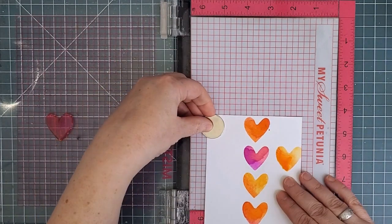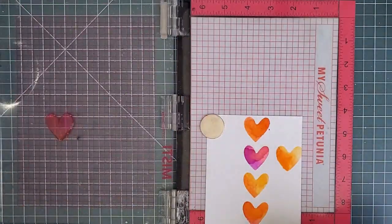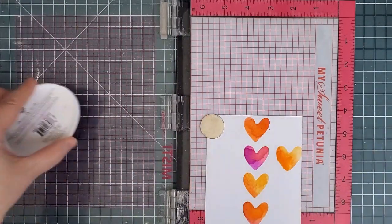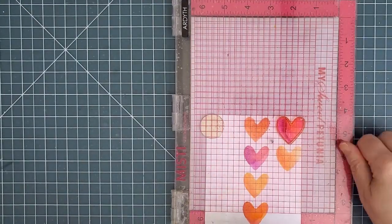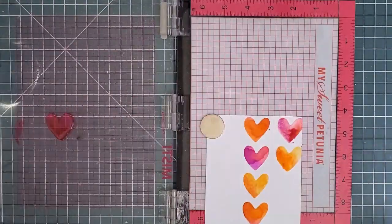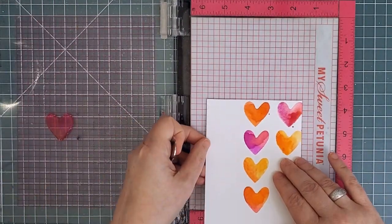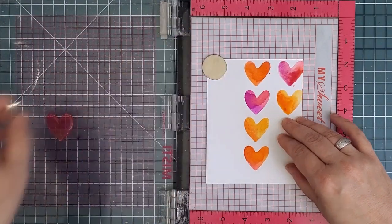If I was going to stamp the same pattern with an acrylic block instead of a MISTI, I could just eyeball the pattern. Because it's a simple grid pattern with a basic shape, it wouldn't be difficult and any imprecision would really just add to the hand-drawn look of this.